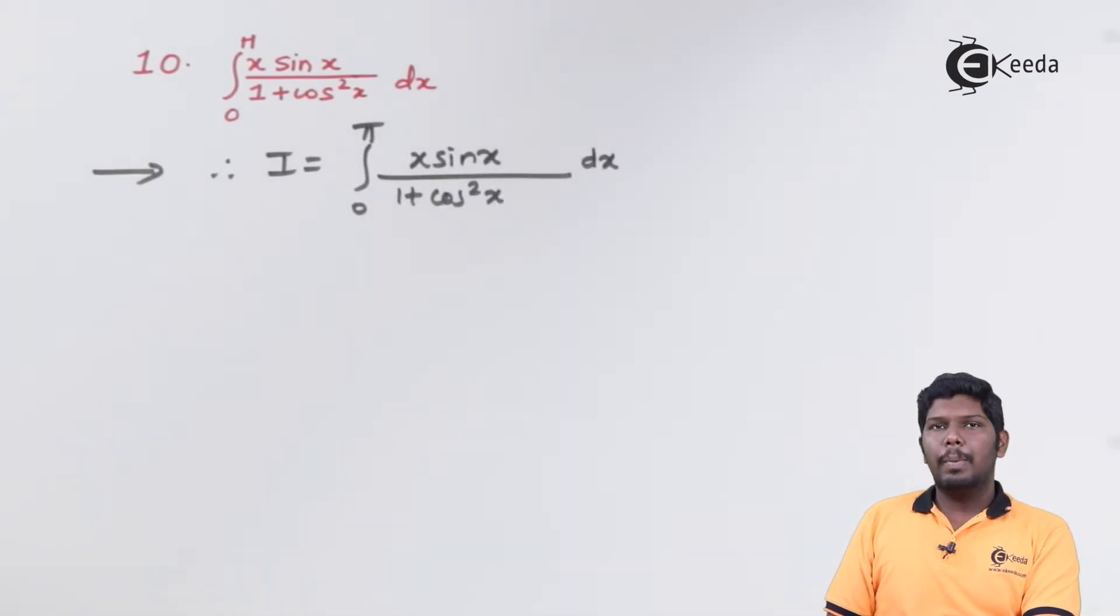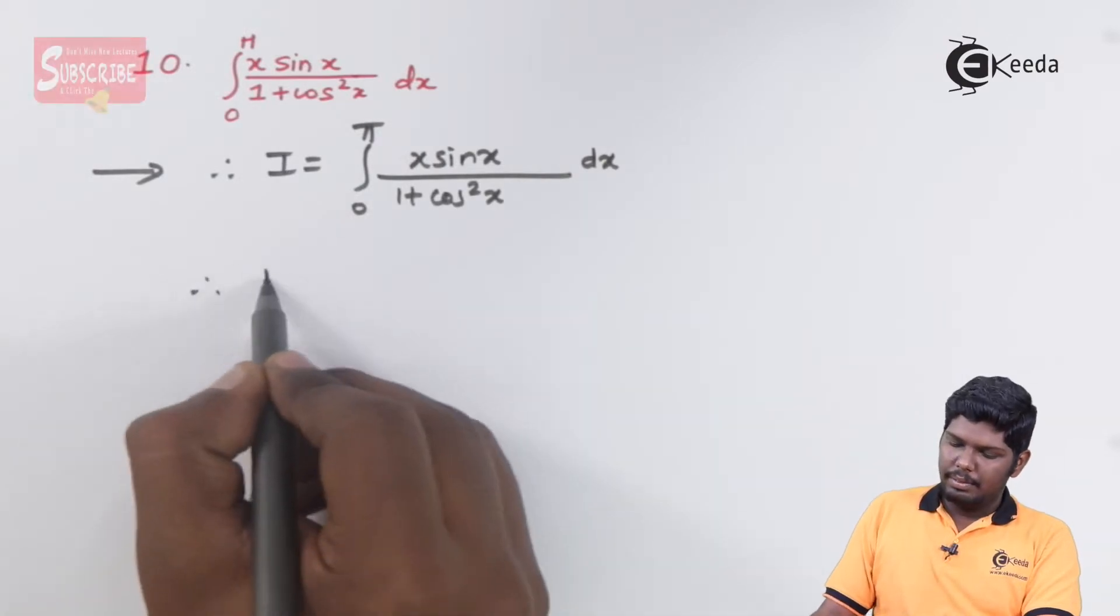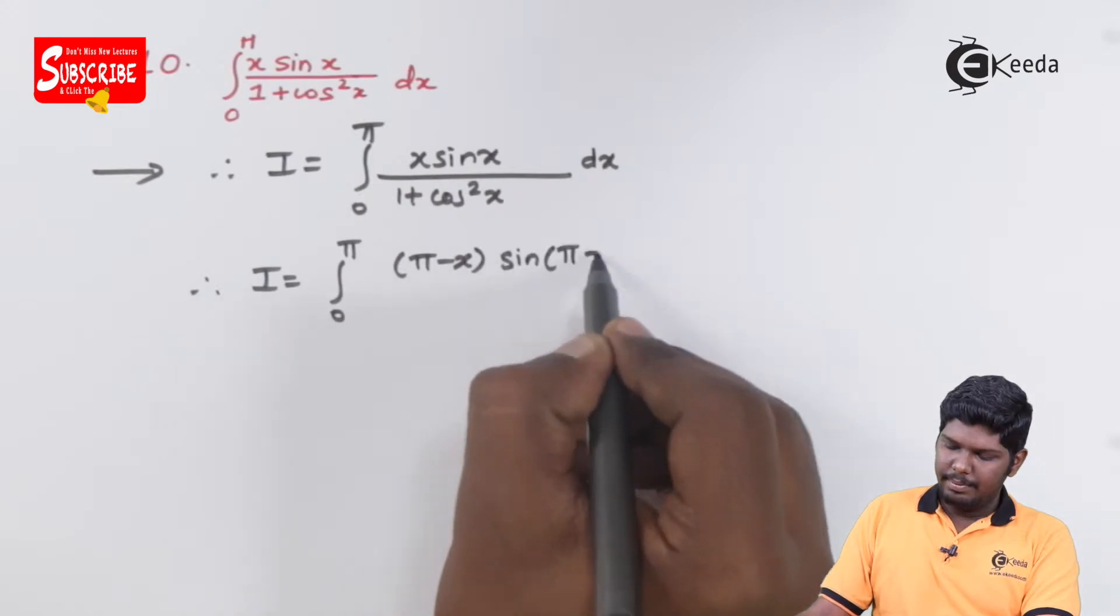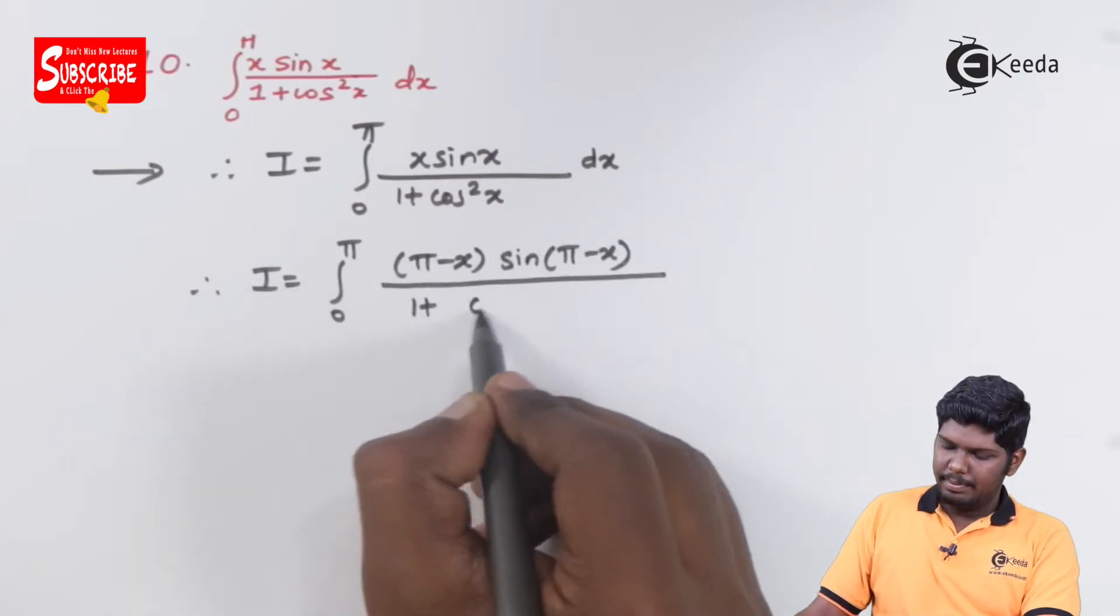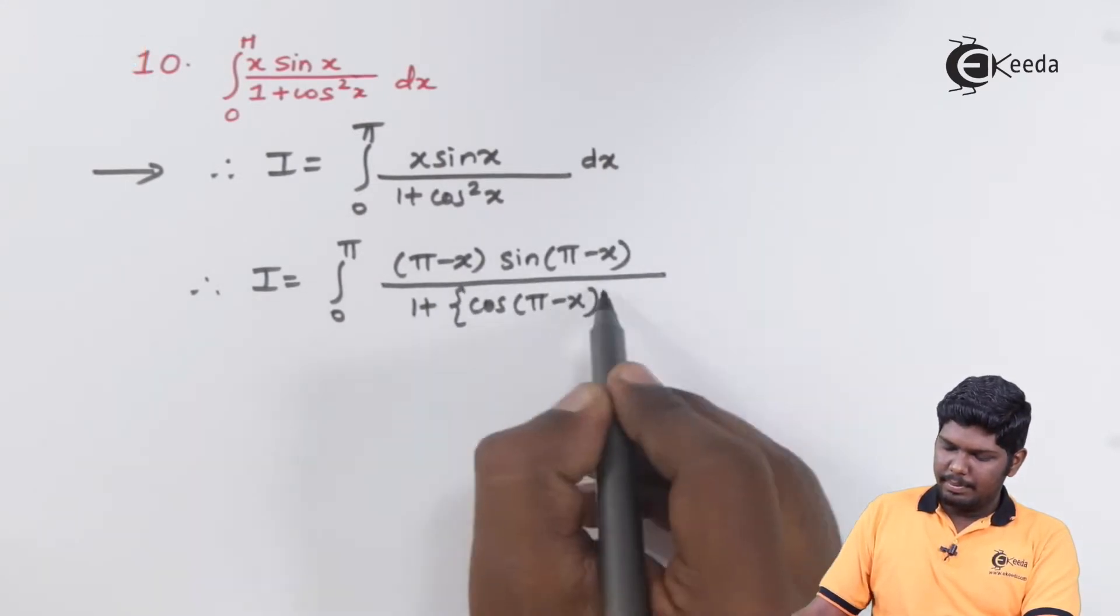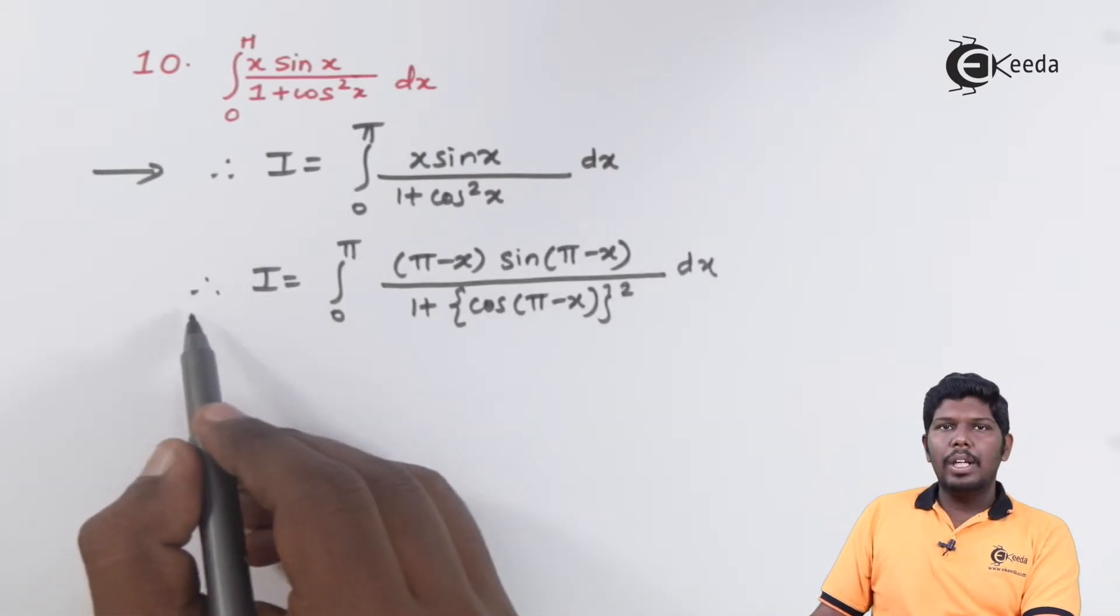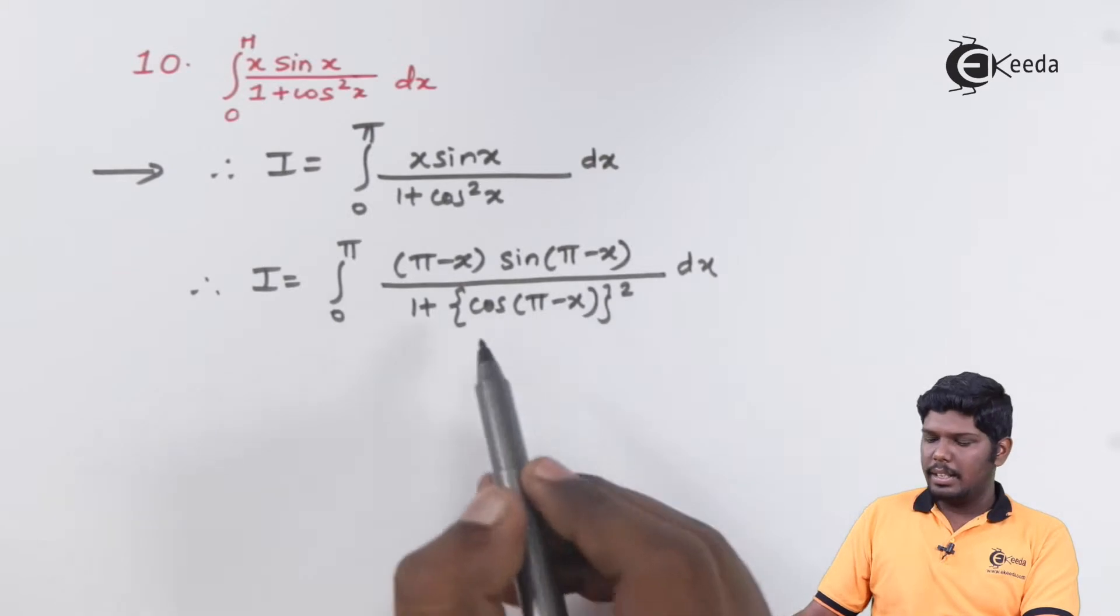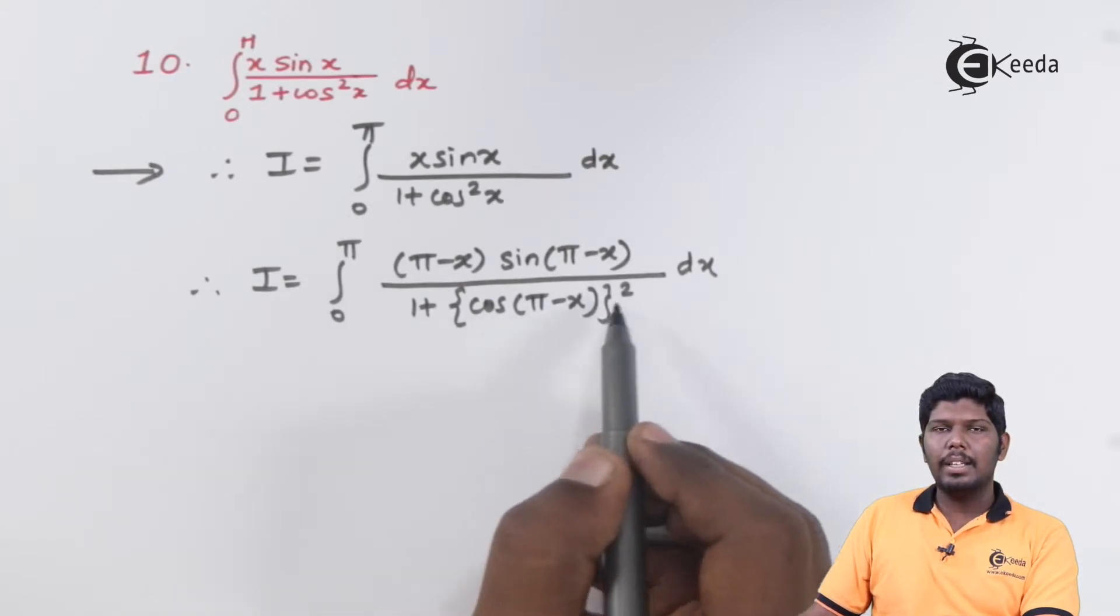Let us use the property as writing x as upper limit minus x. This will give you integral 0 to pi, pi minus x sin x upon 1 plus cos the whole square.